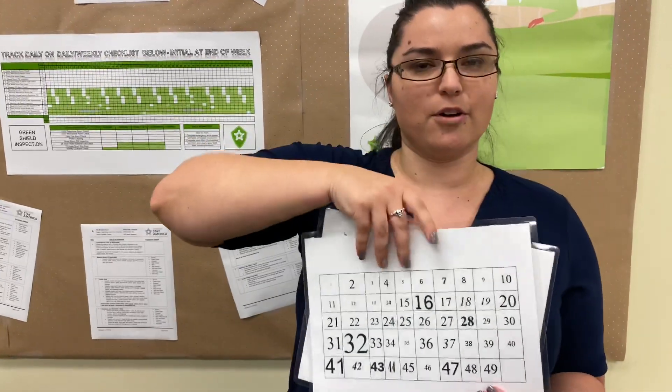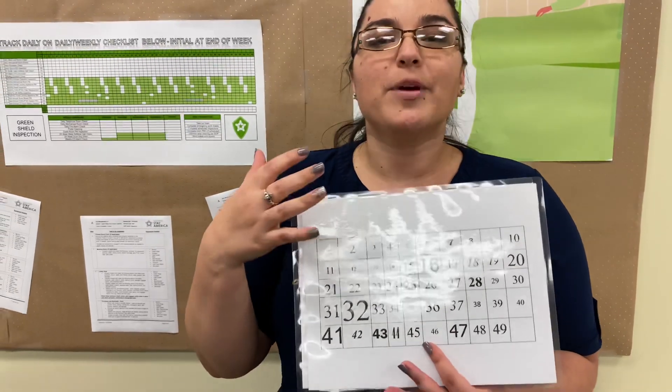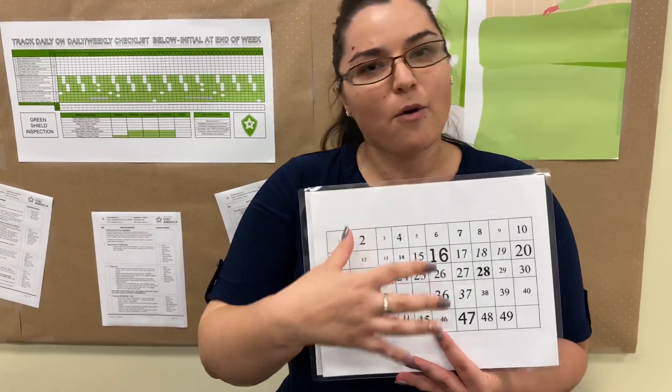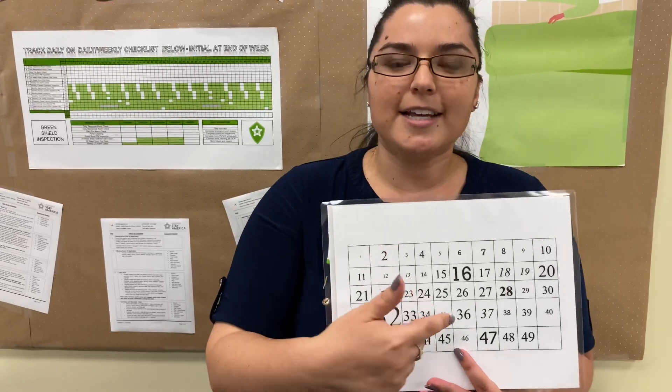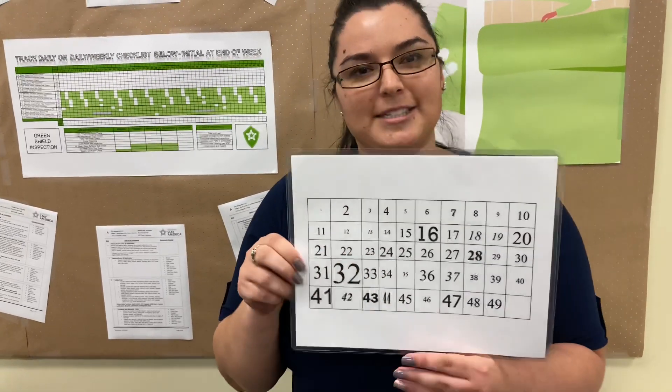Then we're going to turn it over and ask them to find number one, number two, number three. So when we have everything set in place in order, it's easier to find it and to see if it's missing.